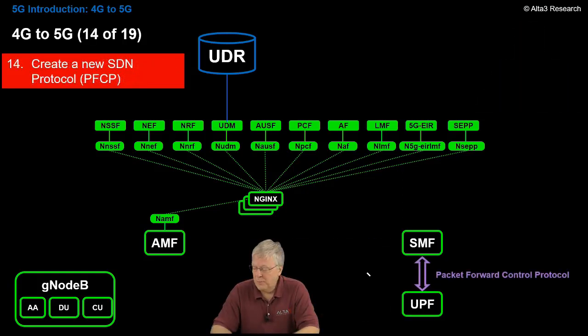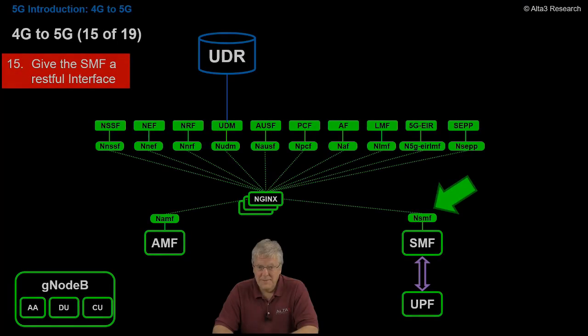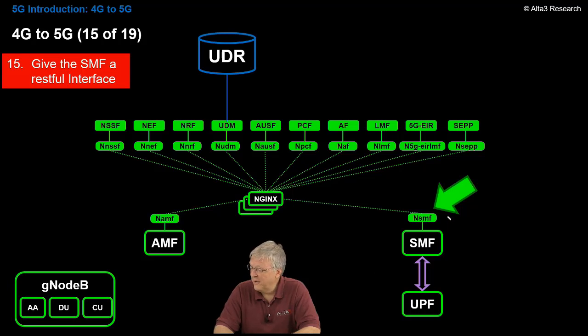Now let's invent a protocol to connect the SMF back with the UPF. And it's going to be proprietary just for mobile, just for 5G, and a tail end of 4G. And that's called the packet forward control protocol. We're going to learn about that here as well. The SMF wants to be part of the club. So it's going to need a restful interface. So there it is. We give it one, the N, SMF.